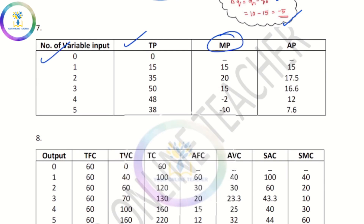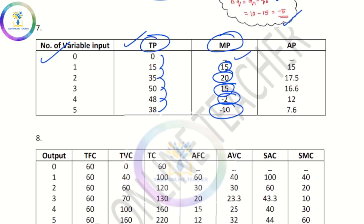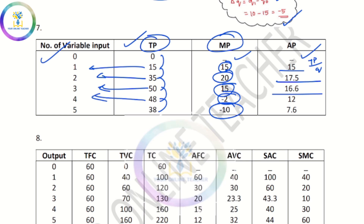If you want to do the marginal value, you can do the total value. 50 minus 0 is 15, 35 minus 15 is 20, 50 minus 35 is 15, 48 minus 50 is minus 2, 38 minus 48 is minus 10. AP is not equal to 0. TP divided by Q: 15 divided by 1 is 15, 35 divided by 2 is 17.5, 50 divided by 3 is 16.6, 48 divided by 4 is 12, 38 divided by 5 is 7.6.